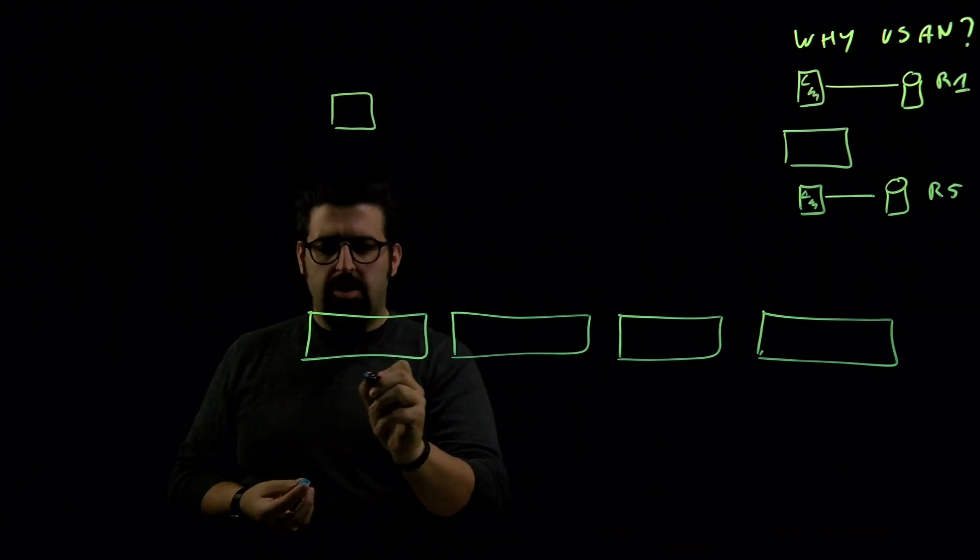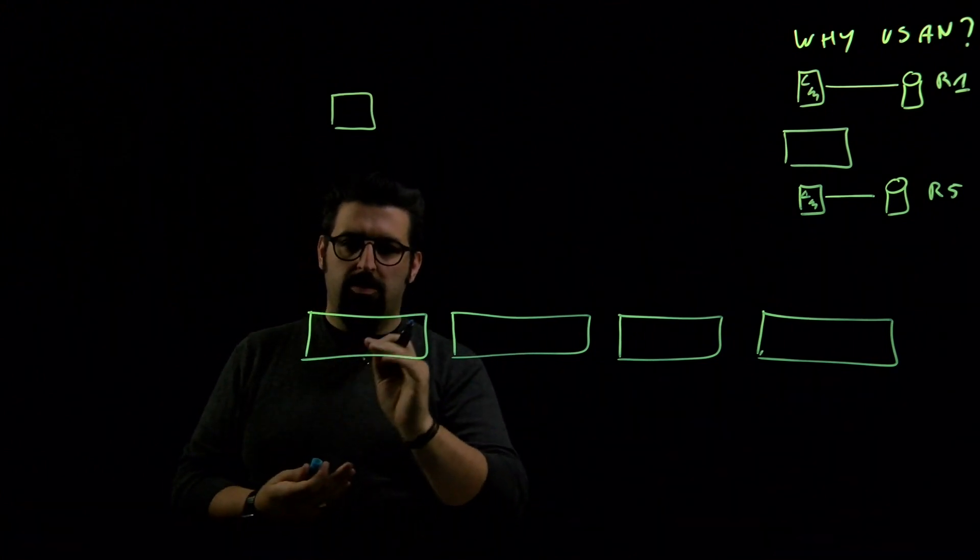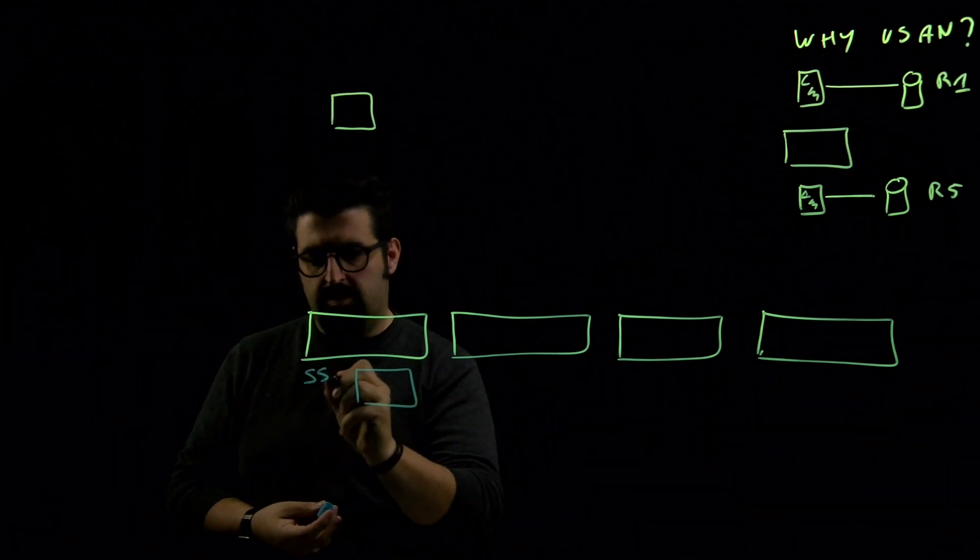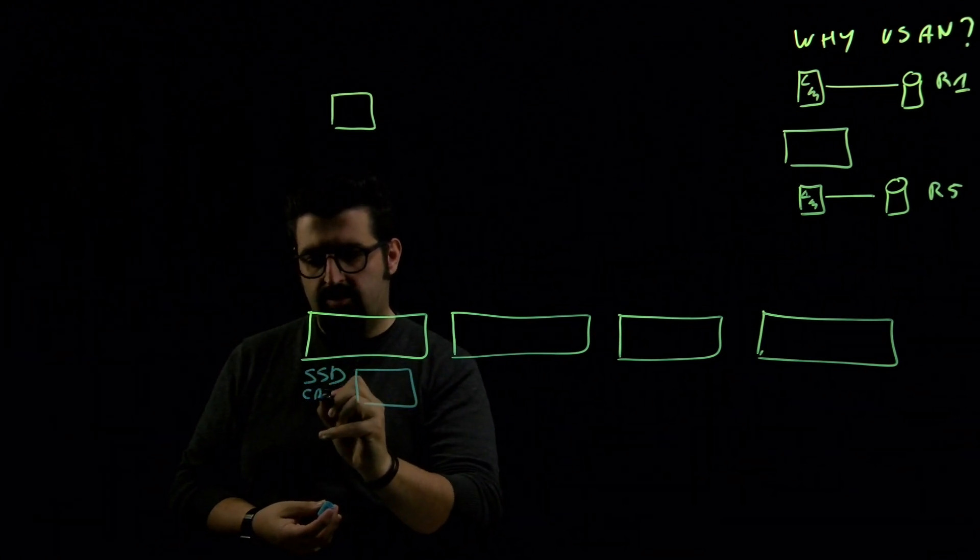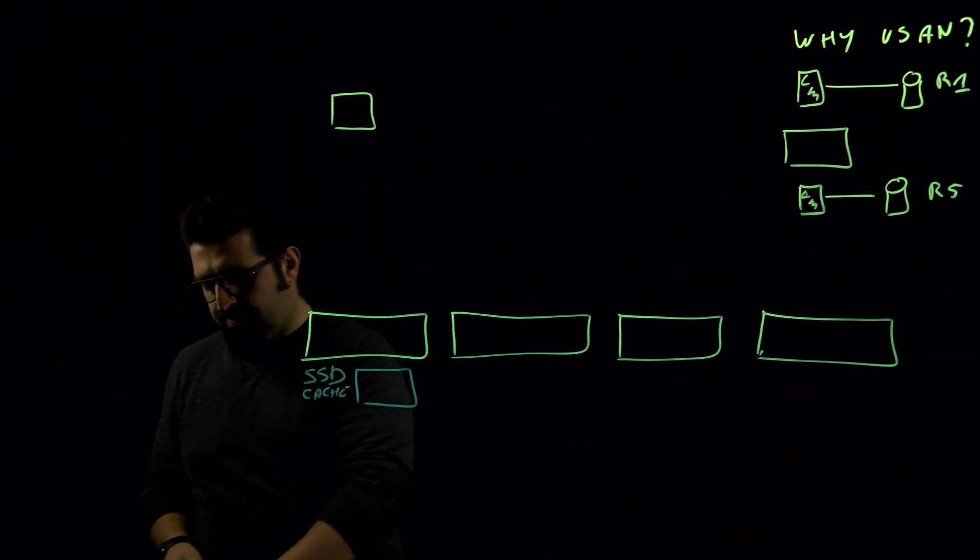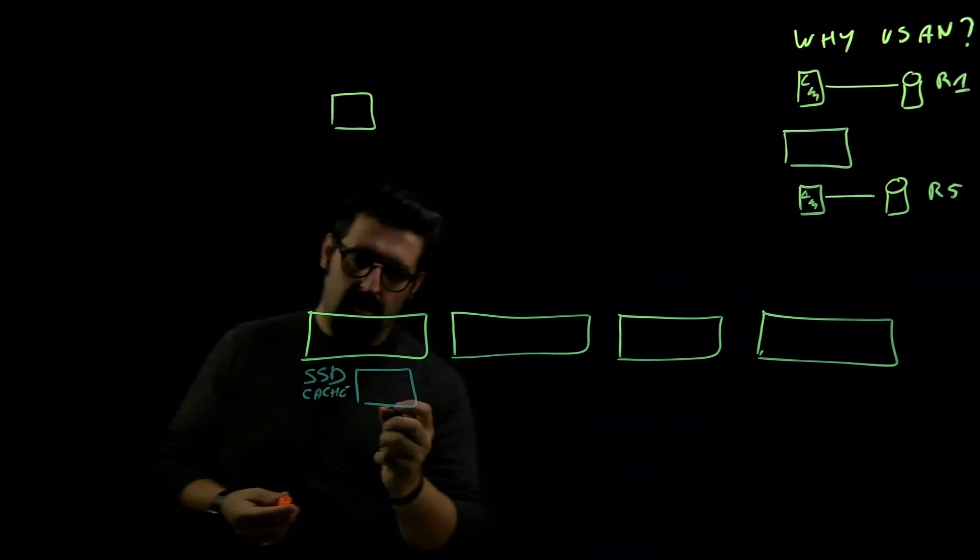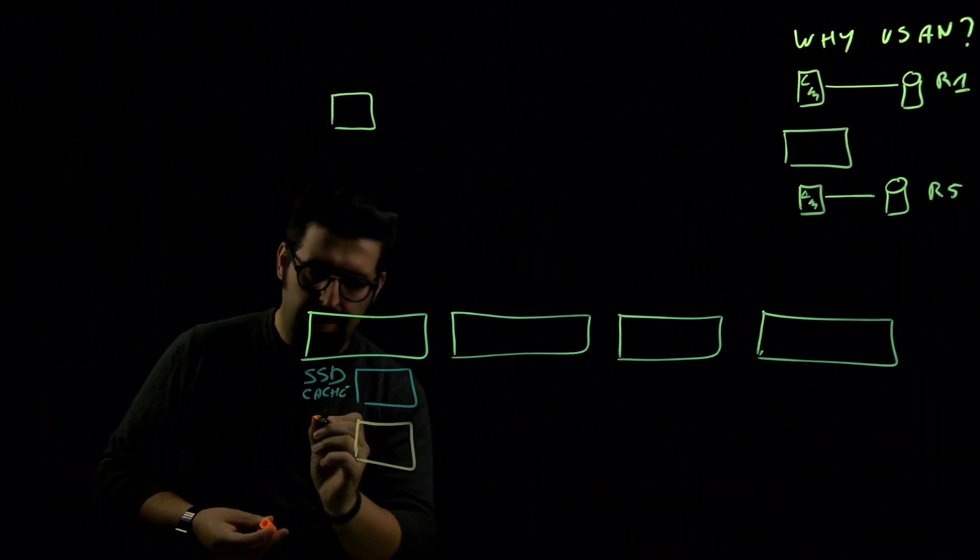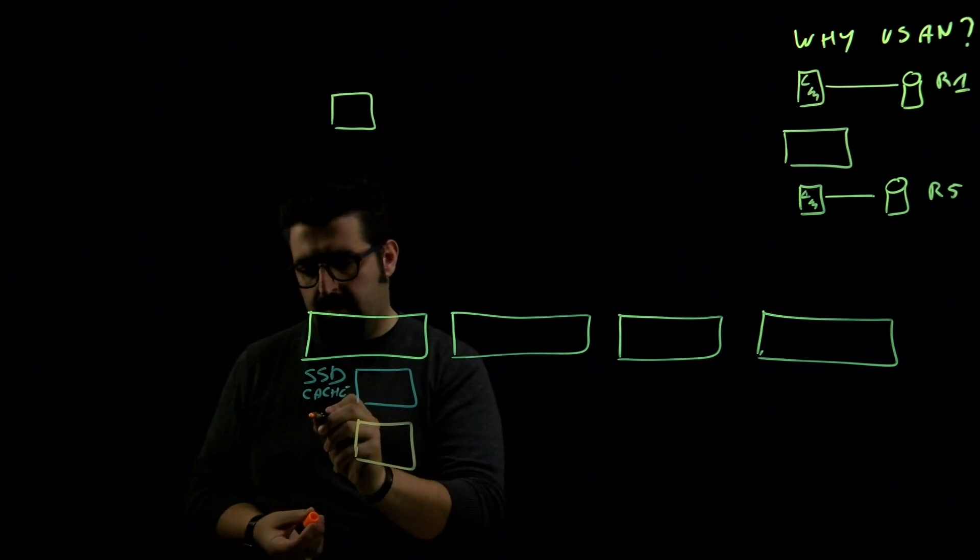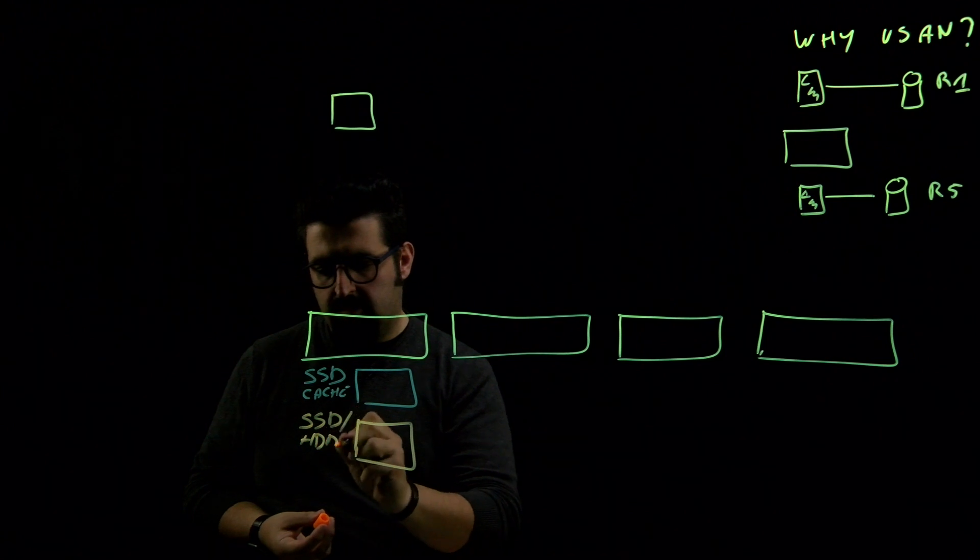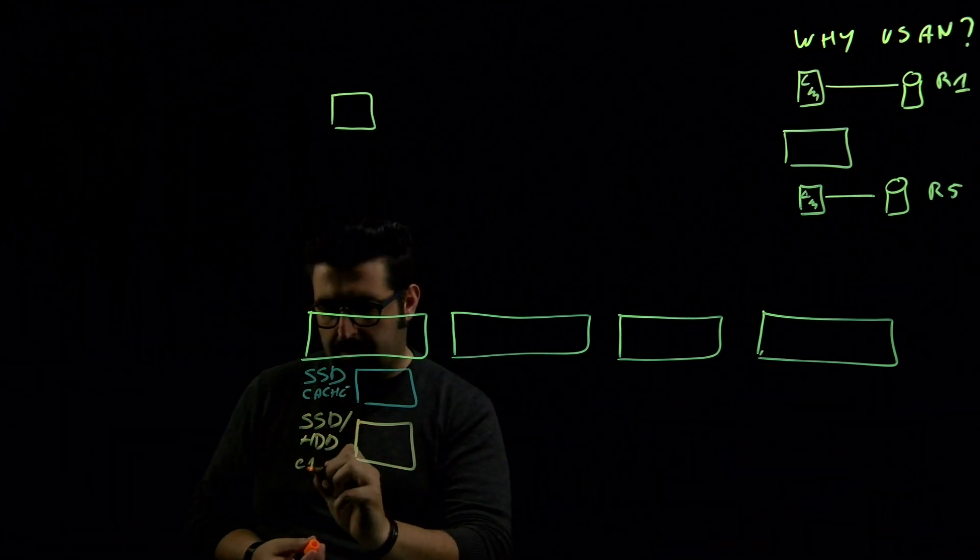For vSAN we need a two-layered approach to store the data. We have an SSD which we use as cache, and we also have a capacity layer. That capacity layer consists of SSDs or magnetic spinning disks and this will be used for capacity.